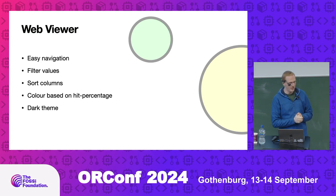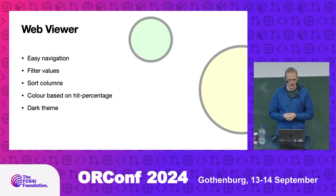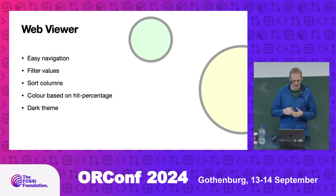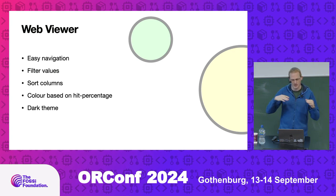We've also got a web-based viewer. You can dump stuff out in the console, but my colleague Ed has written a very nice web viewer — it opens up in your browser and allows for easy navigation, filtering of values, so you can just see the buckets you want to see. You can sort columns.